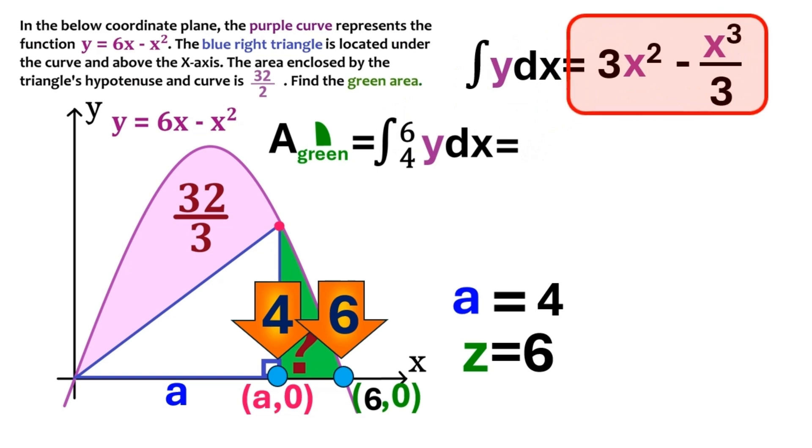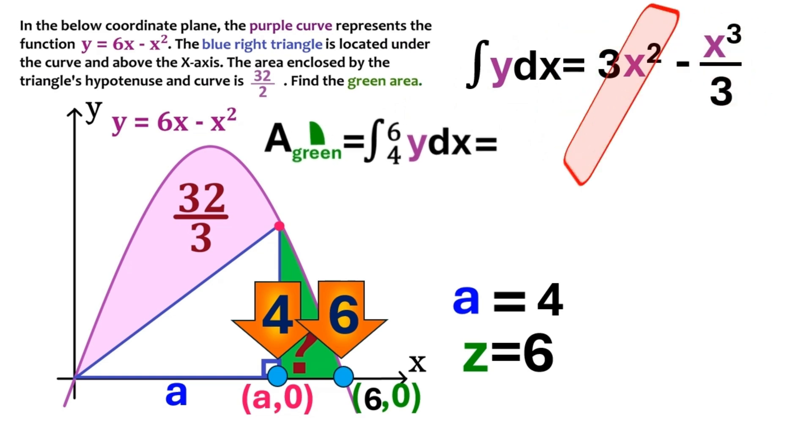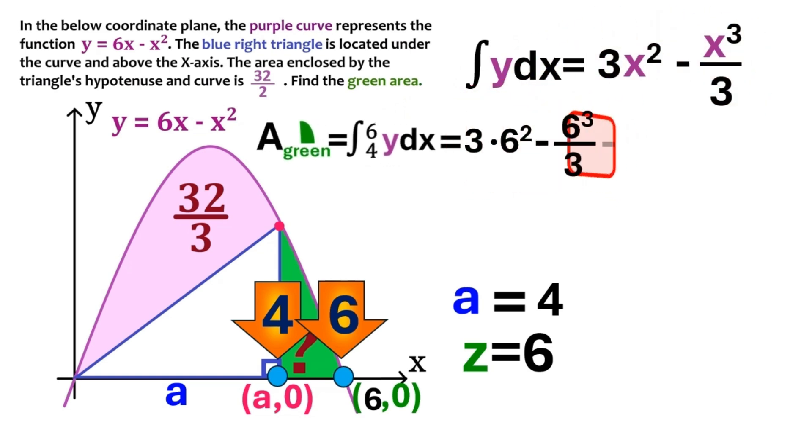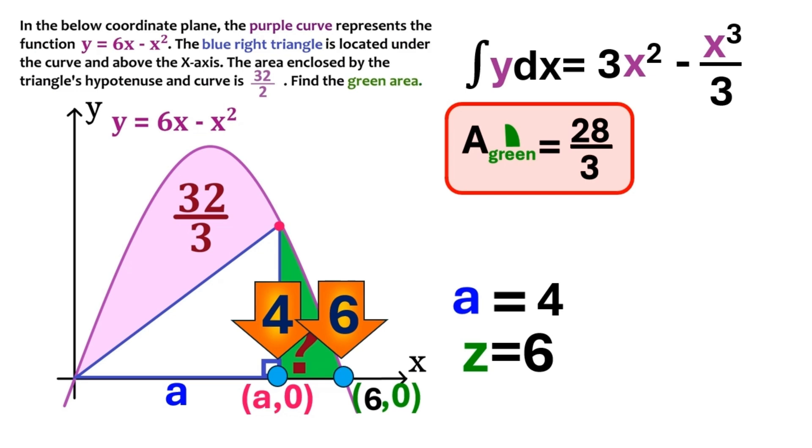First, we'll substitute 6 for the x-axis in this integral. And we get this. We put this minus sign here. And next, we put 4 into the integral. And this is what we get. And what follows is pure arithmetic, which I'm doing for you. And there we are. 28 over 3 is the area of the green region.